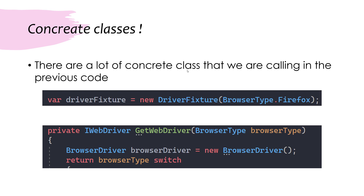The concrete classes we have at the moment include things like the driver fixture — we have used the new driver fixture, and similarly we have used the get web driver method with a browser driver. Every time you call get web driver, you create a new object of the browser driver, which is not quite right, and similarly for the driver fixture as well.